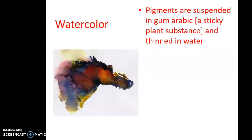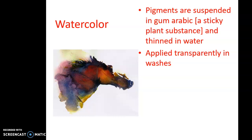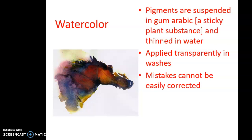Watercolor consists of pigments suspended in gum arabic — a sticky plant substance — and thinned with water. It is applied transparently and in washes. On the bridge and the top of the horse's head and nose, those white highlight areas are not painted with white paint — the artist simply leaves the white of the page. Mistakes cannot easily be corrected with this material. Page 166, figure 7-9 shows an example of a watercolor in your text.